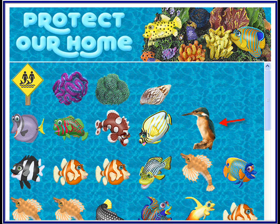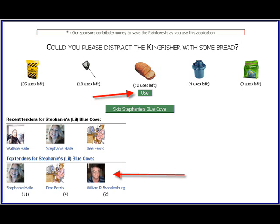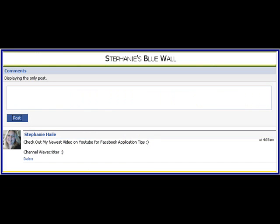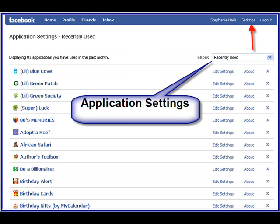This is the Cove — so cool. The little Blue Cove lets you protect and save the rainforest. It's definitely easy to work. You just feed the kingfisher or clear out the funk in the water. See, that little customized guy is there too — same on this application as well. This is Little Blue Cove, and the other one was the Little Green Patch. Both save the rainforests, so kudos to them.